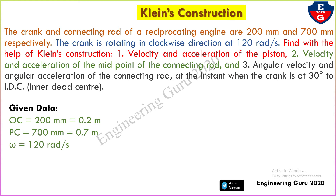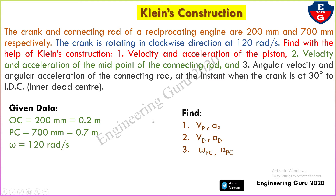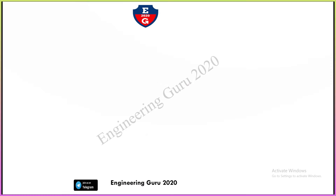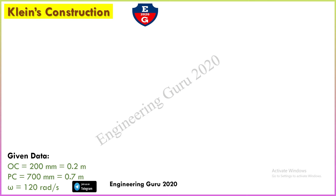Given data: OC, the crank length, is 200 mm, which converts to 0.2 meter. Length of connecting rod PC equals 700 mm, which is 0.7 meter. Omega is given as 120 radian per second. Our goals are to find VP and AP (velocity and acceleration of piston), VD and AD (velocity and acceleration of the midpoint), and omega PC and alpha PC (angular velocity and angular acceleration of the connecting rod). We will find these using the graphical method.